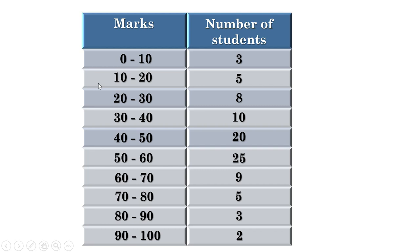Suppose a student got exactly 10 marks — where do we include him: in the first class or the second class? We include him in the second class, because from 0 to just below 10 is included in the first class, and from 10 to just below 20 is included in the second class, and so on.